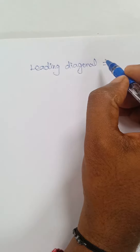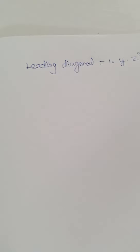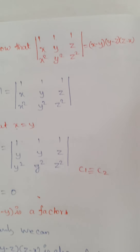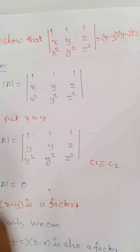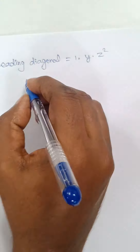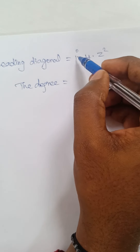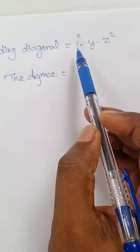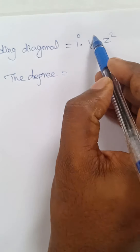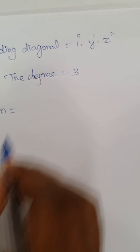The leading diagonal of the determinant is 1·y·z². The degree of 1 is zero (constant), the degree of y is 1, and the degree of z² is 2. So the degree of the leading diagonal product 1·y·z² is 0+1+2 = 3.